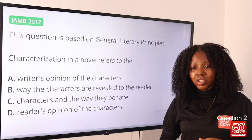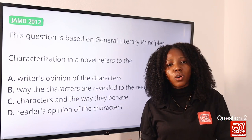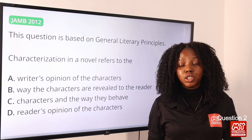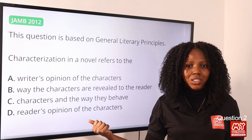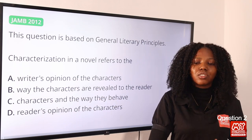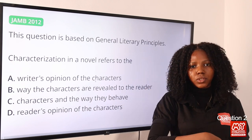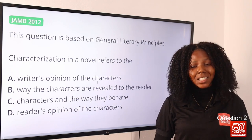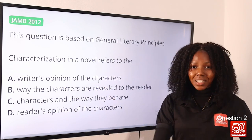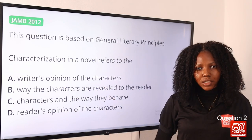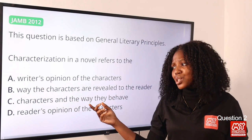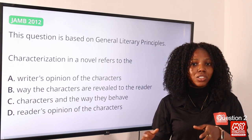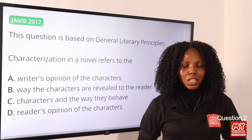Characterization is the way the author has described his character. For example, in Things Fall Apart by Chinua Achebe, we can only describe the character Okonkwo within the context of the text — it is the way the author has described him. So the best answer is option B: the way the characters are revealed to the readers. Options A and C are tempting but don't give a good description of characterization.